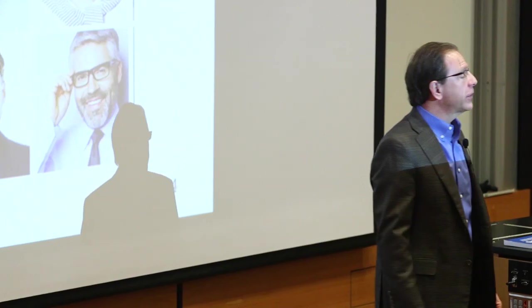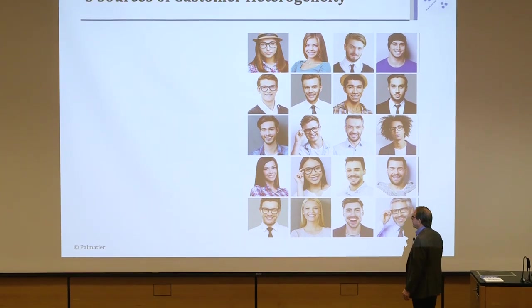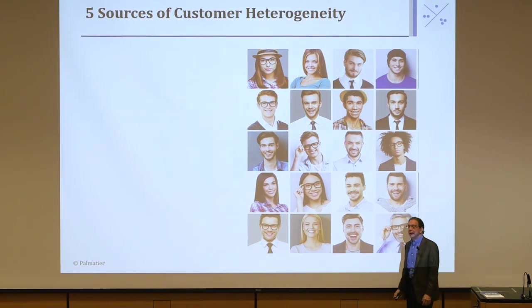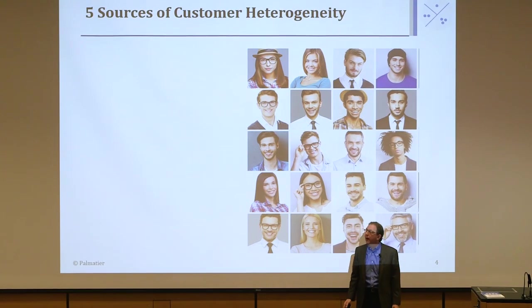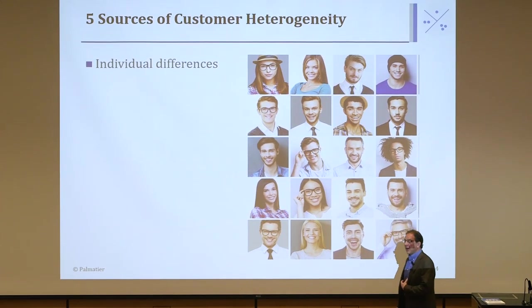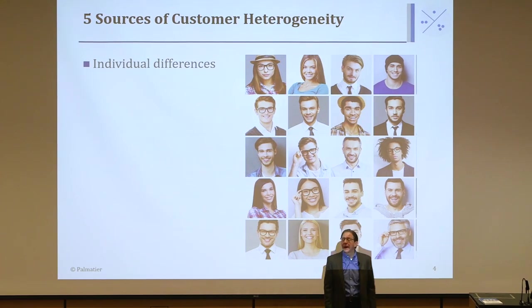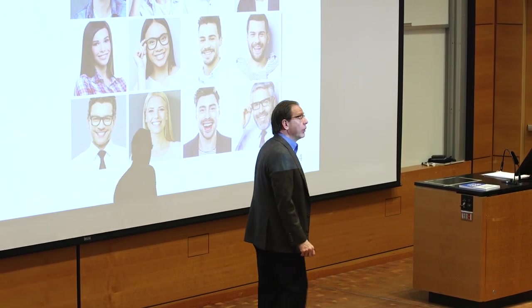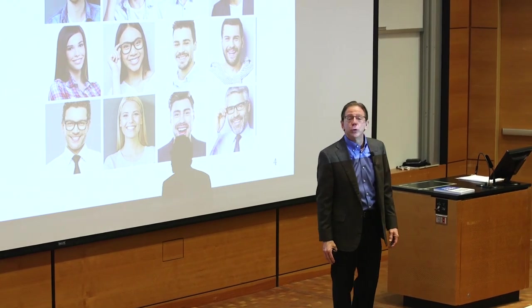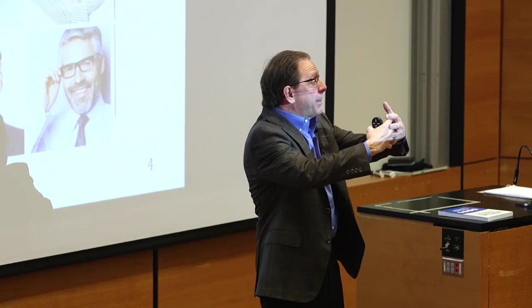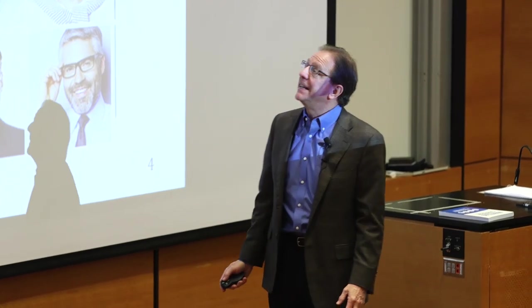Where does this customer heterogeneity come from? We're going to look at five different sources of why customers' needs differ. First is individual differences. Psychologists study this quite a bit — individual people typically follow a bell curve around most of their characteristics. If you look at their favorite color, people vary widely across the globe, how spicy they like their food, all sorts of things vary. That's just their individual makeup — all their genetic makeup put together made them desire certain things.